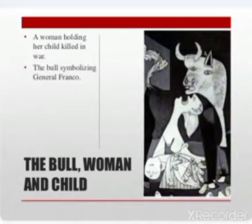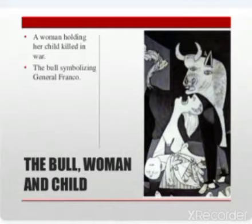Then the virgin and child — underneath the image of the bull sits a woman clutching a dead child, her head facing the sky in an anguished cry, her eyes in the shape of tears. This image was meant to resemble the classic Catholic image of the Virgin and Child, tainted by war. It shows the trauma of death, loss, and the aftermath of suffering caused by the war.